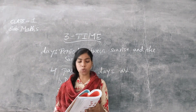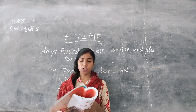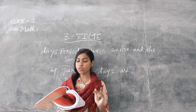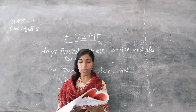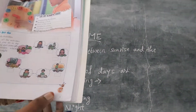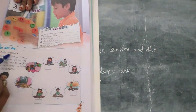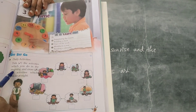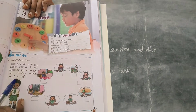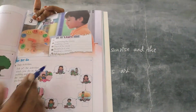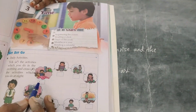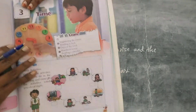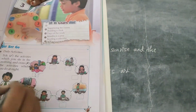Daily activities — get set, go. Tick and put a right mark on the activities which you do in the morning, and cross the activities which you do at night. See here, page number 193, daily activities.